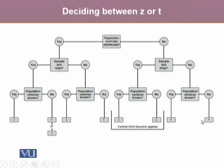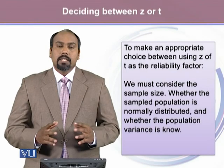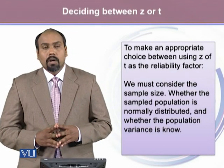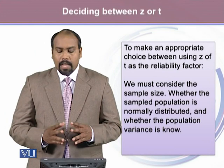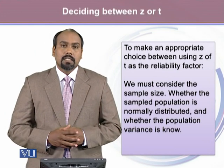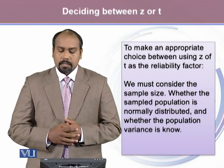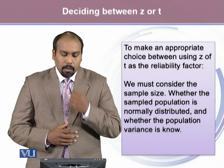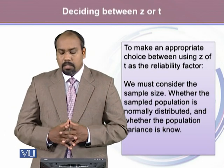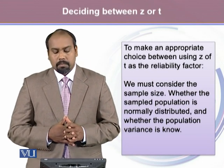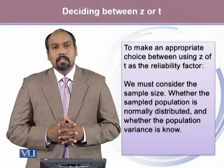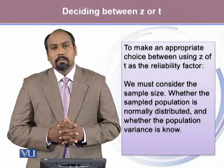To make an appropriate choice between using Z or T as the reliability factor, we must consider the sample size, whether the sampled population is normally distributed, and whether the population variance is known.